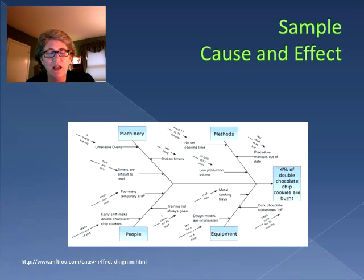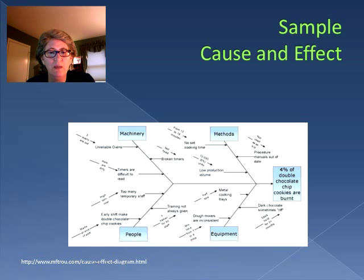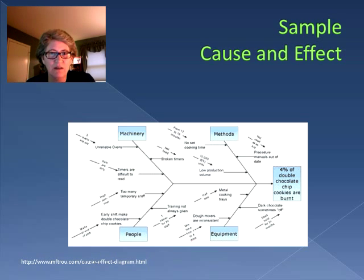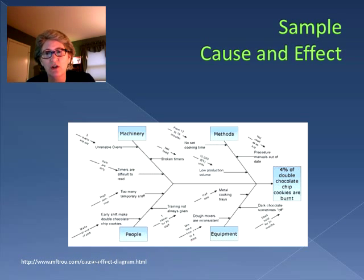Looking at the diagram, under machinery we have unreliable ovens and possibly broken timers. For methods, maybe we don't have a set cooking time or the procedure manuals are out of date. For people, there may be too many temporary staff or not enough training. For equipment, some things may be inconsistent. We use the spine titles as a basis for analyzing why a particular situation is occurring, and then we write the potential causes on those spines.